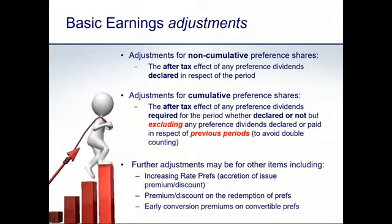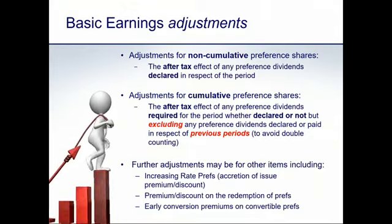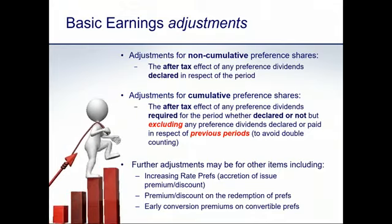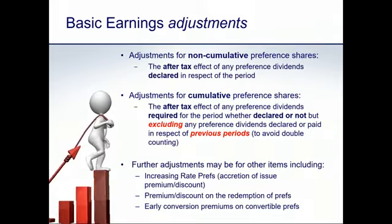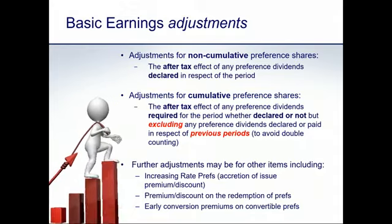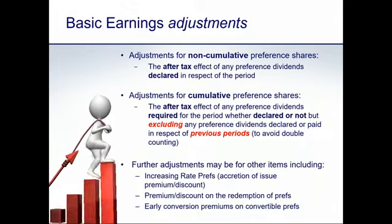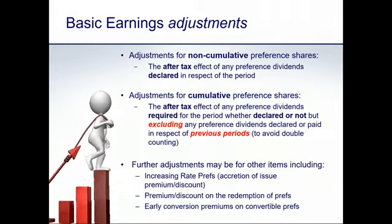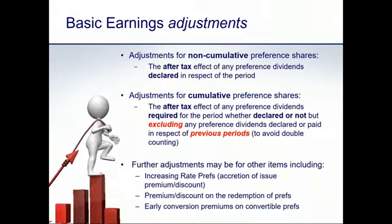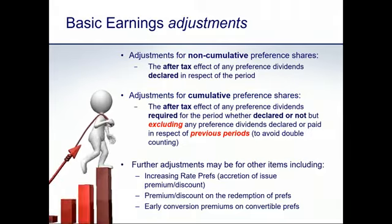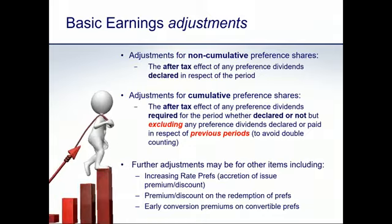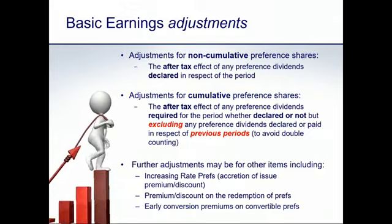Further adjustments may also be required depending on the entity's complexity and instrument types. For increasing rate preference shares issued at a premium or discount — where that premium or discount is accreted to retained earnings over the instrument's life — we adjust for the annual accretion of that premium or discount in arriving at profits attributable to ordinary shareholders, even though this adjustment occurs within equity components. Any premium or discount realized on redemption of preference shares is also adjusted for.